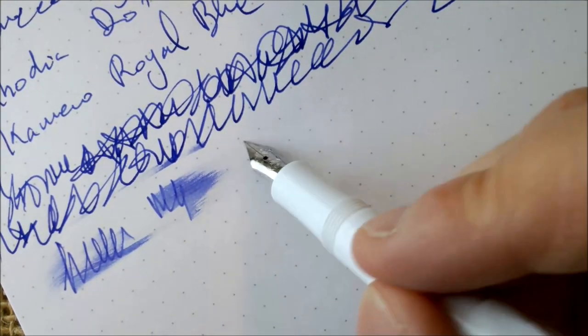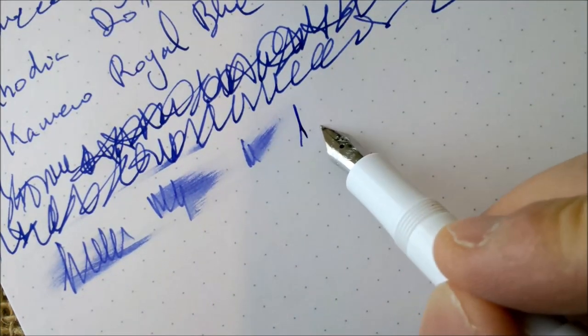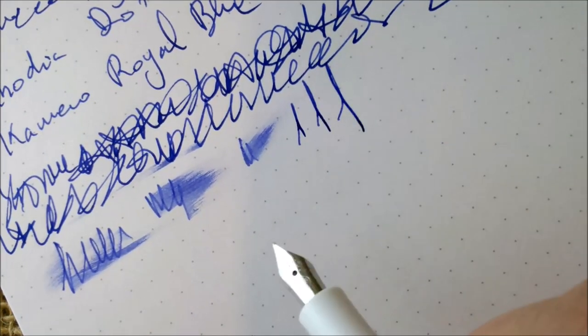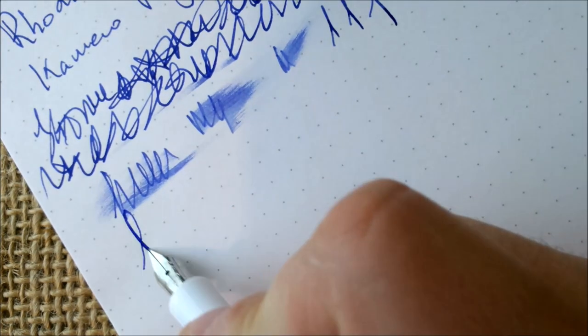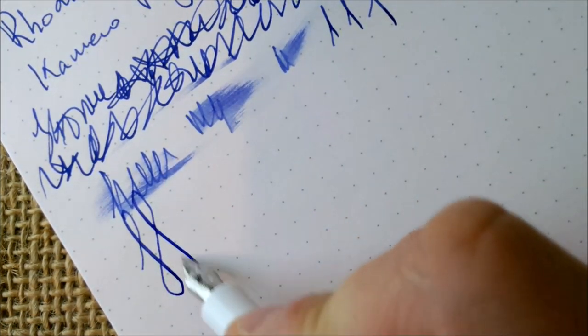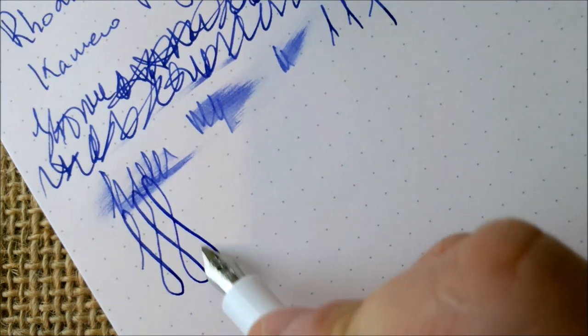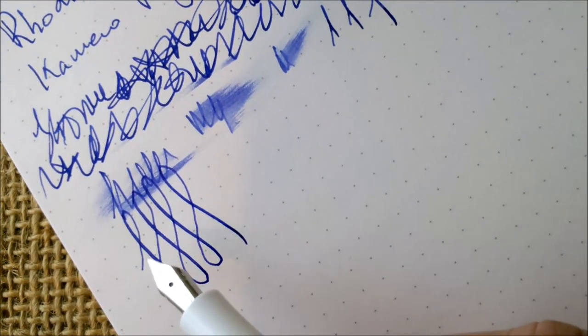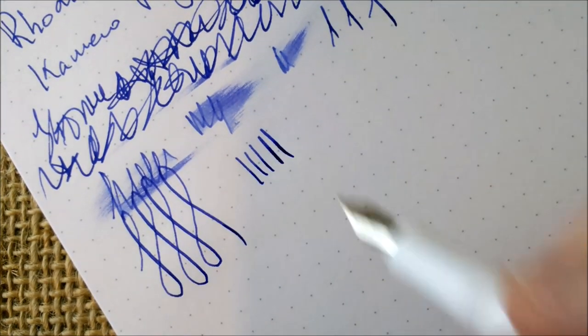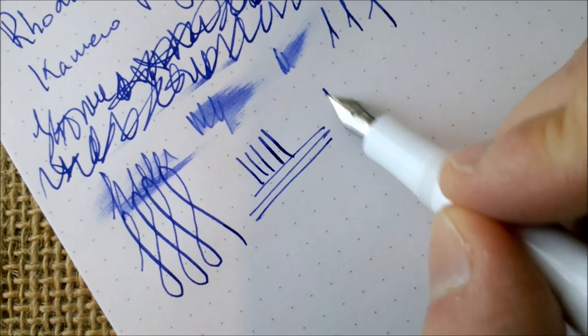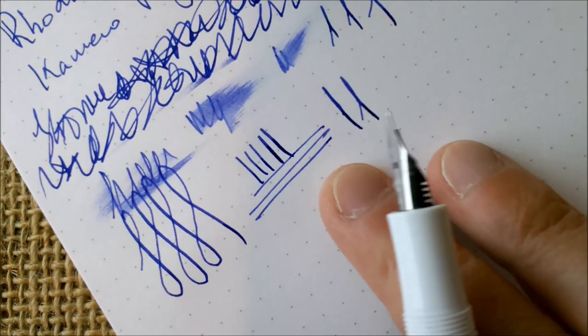About line variation in Kaweco Sport, you can almost always get some. You have to press the nib a little, it is not meant to do it, but as you can see you can really have some line variation. It's not that the pen flexes but if you really press it hard it will do it. Just be careful not to ruin the nib.